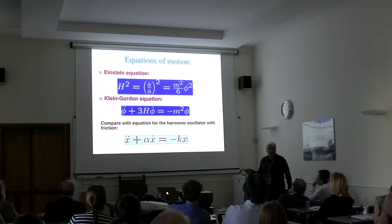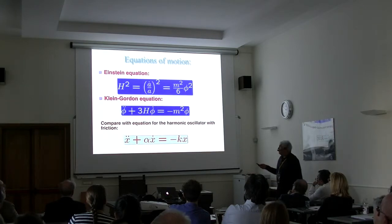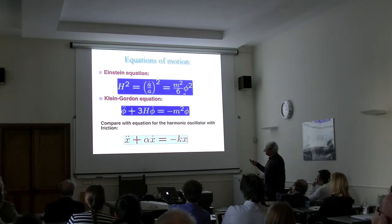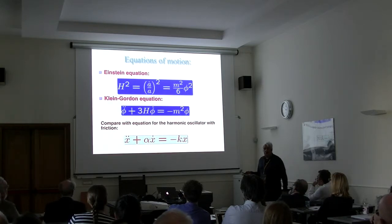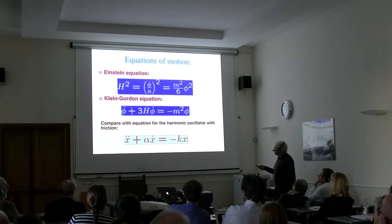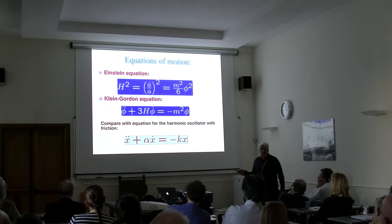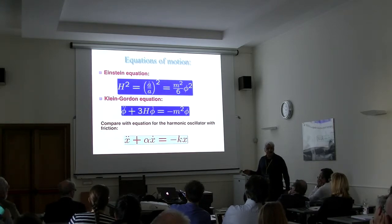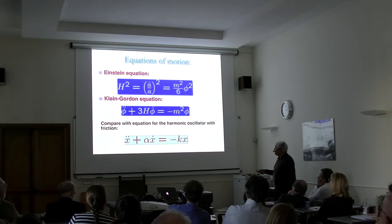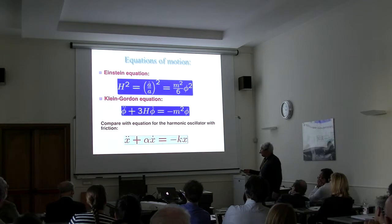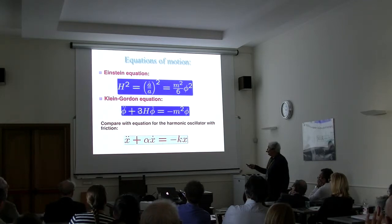We write down slightly simplified Einstein equations, assuming the universe is already almost flat — because even if we start with closed or open geometry, inflation very rapidly makes it practically flat. I also ignore kinetic energy terms and gradient terms for the scalar field because if inflation starts, these exponentially rapidly disappear. The equation for the homogeneous scalar field is an oscillator equation with friction.